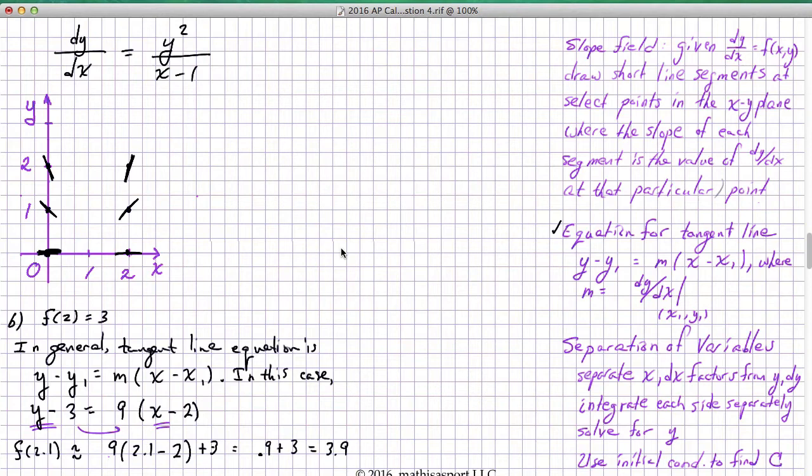Now we move to part C. And this is solving the differential equation exactly. So just to be clear, what we've done previously is we found an approximate solution for a particular x value of this equation. Now we want to solve it exactly. And to do that, we're going to use the method of separation of variables. Namely, just to recap, we're going to separate x and dx factors, put them on one side of the equal sign, put the y and dy factors on the other. That allows us to integrate each side separately.